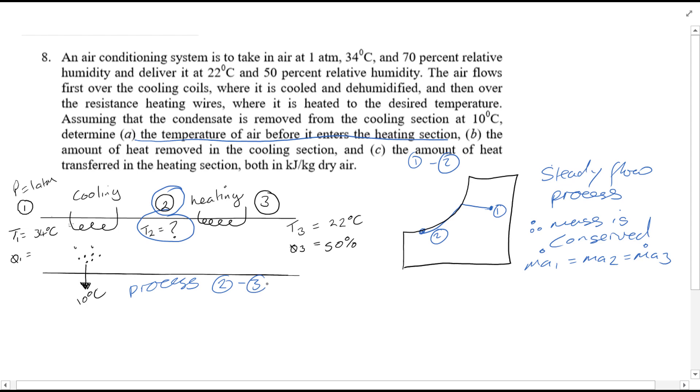Since process two to three is heating, specific humidity will not change. Therefore w1 is equal to w2 is equal to w3. Note that they're not equal to w1 because dehumidification occurs in process one to two. Okay, we can quite easily find w3 because we've got two values here. We're able to use chart A31 and find w3, which is equal to w2 as we said, and we'll find that to be equal to 8.4. So we've got one value at point two now.